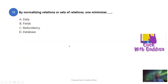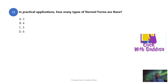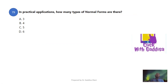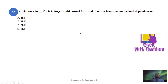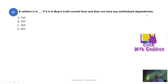By normalizing a relation or set of relations, one can minimize redundancy. In practical applications, there are multiple types of normal forms: first normal form, second normal form, and third normal form. A relation is in fourth normal form (4NF) if it is in Boyce-Codd Normal Form (BCNF) and does not have any multi-value dependency.